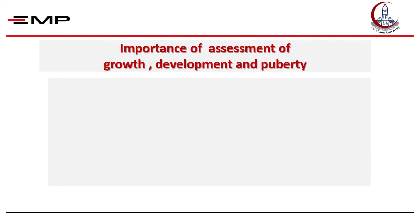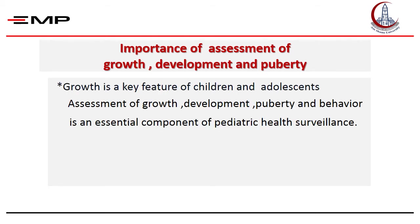What's the importance of assessment of growth, development, and puberty for every child at every health visit? First, growth is a key feature of children and adolescents. Children with abnormal growth or development are having underlying disease. Early growth failure may have persistent consequences for growth and puberty progression in later life. So, assessment of growth, development, puberty, and behavior is an essential component of pediatric health surveillance. It is also a way to assess health and wellness of children and to indicate good control of chronic illnesses — meaning that if a child with chronic illness like renal disease, malabsorption, or chronic anemia is growing well and progressing to puberty in the proper timing, this indicates good control of his disease.